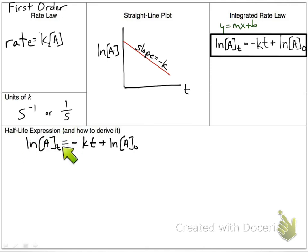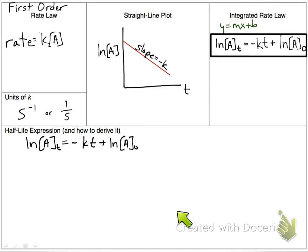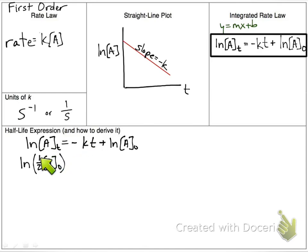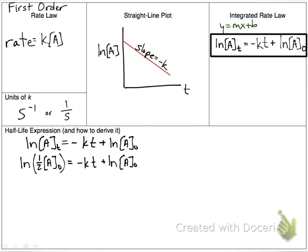For deriving the half-life, we do the same thing but with a bit more algebra. Starting from the integrated rate law, I substitute for concentration at t: I make it one-half times the initial concentration, because the half-life occurs when the concentration is half of whatever the initial concentration was. Then I rewrite the rest of the expression and do some math to break it down.